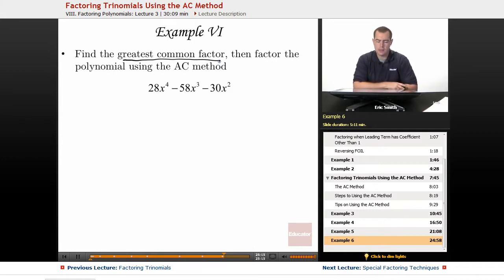Furthermore, they all have an x squared in common. So before we even start some of the AC method, let's go ahead and pull out that common term first. What do they have in common? Well, everything is divisible by 2, and they all have an x squared. So let's take out a 2x squared.